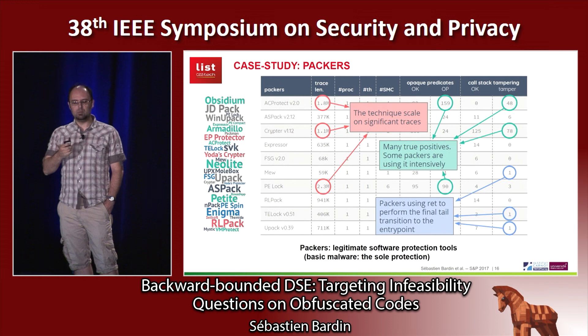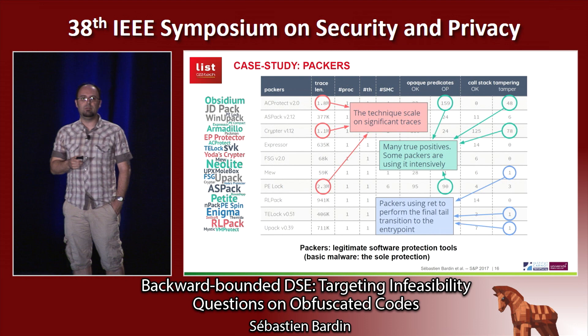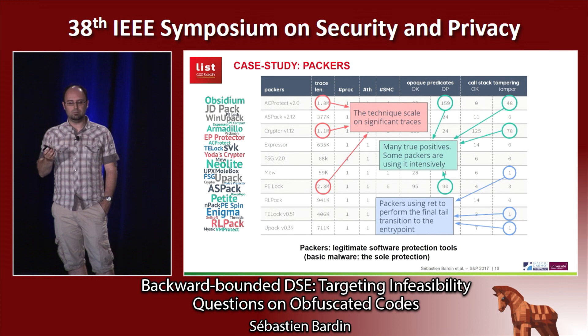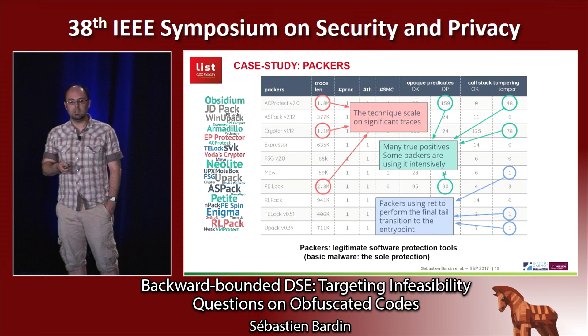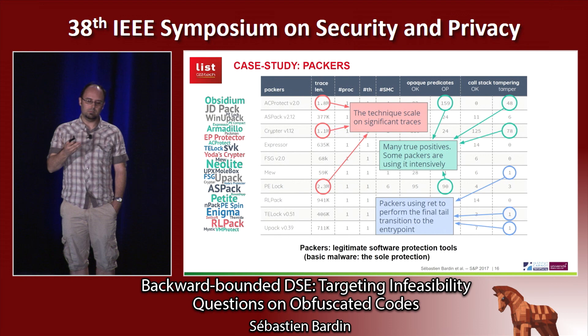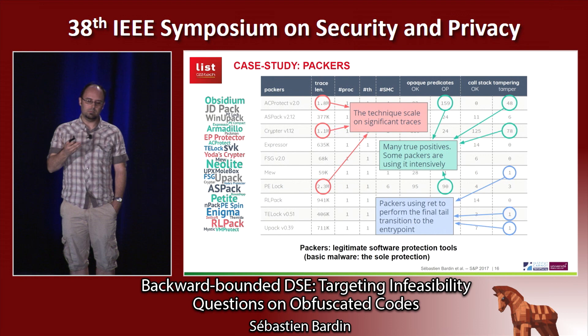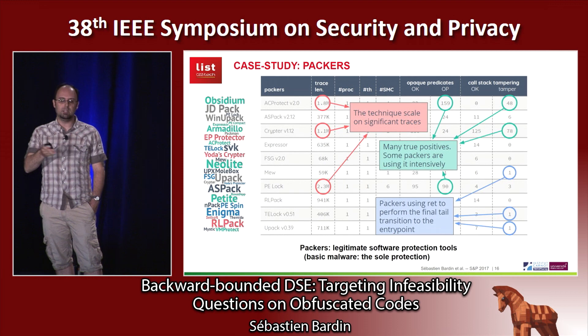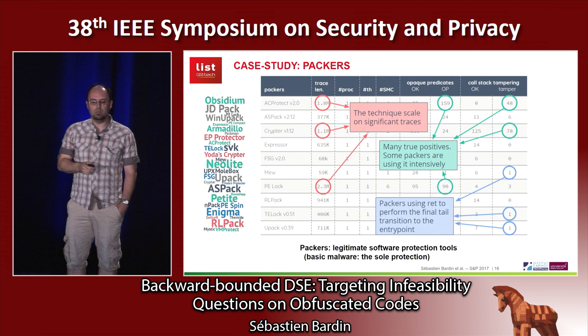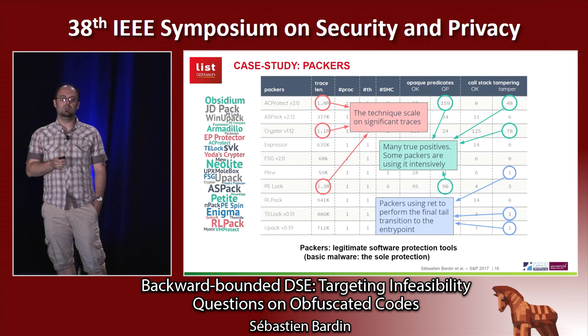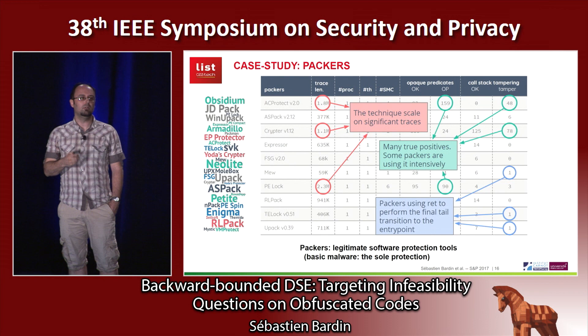For packers: packers are legitimate software protection tools, very representative of state-of-the-art protection. For basic malware, packers are the sole line of defense, and they combine many techniques — self-modification, encryption, opaque predicates, and so on. Our experiments show the technique scales on significant traces and on realistic protection. All the packers we mention combine self-modification with other protections we are interested in. We manage to find many opaque predicates and interesting facts on stack tampering in these examples, showing the technique can find useful things under realistic conditions.